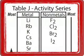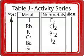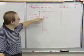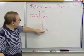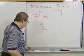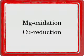On reference table J, metals are listed from most likely to undergo oxidation to most likely to undergo reduction. So if I was going to make a battery with magnesium and copper, since magnesium is higher than copper, magnesium would be more likely to undergo oxidation and therefore copper would undergo reduction.